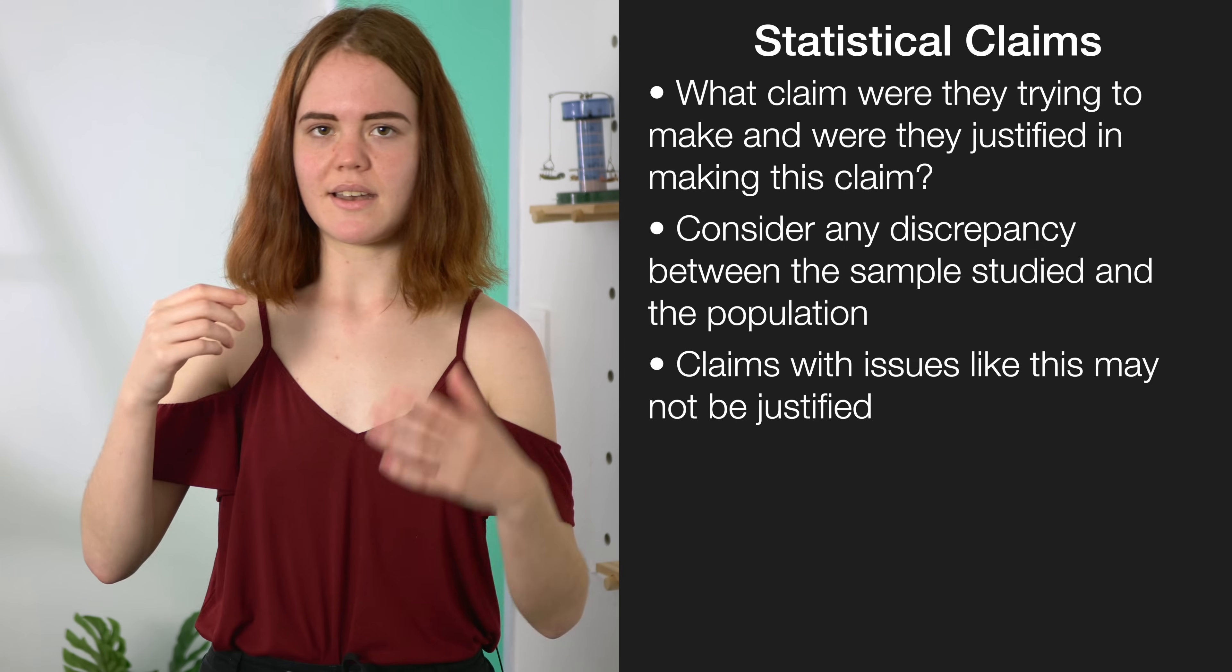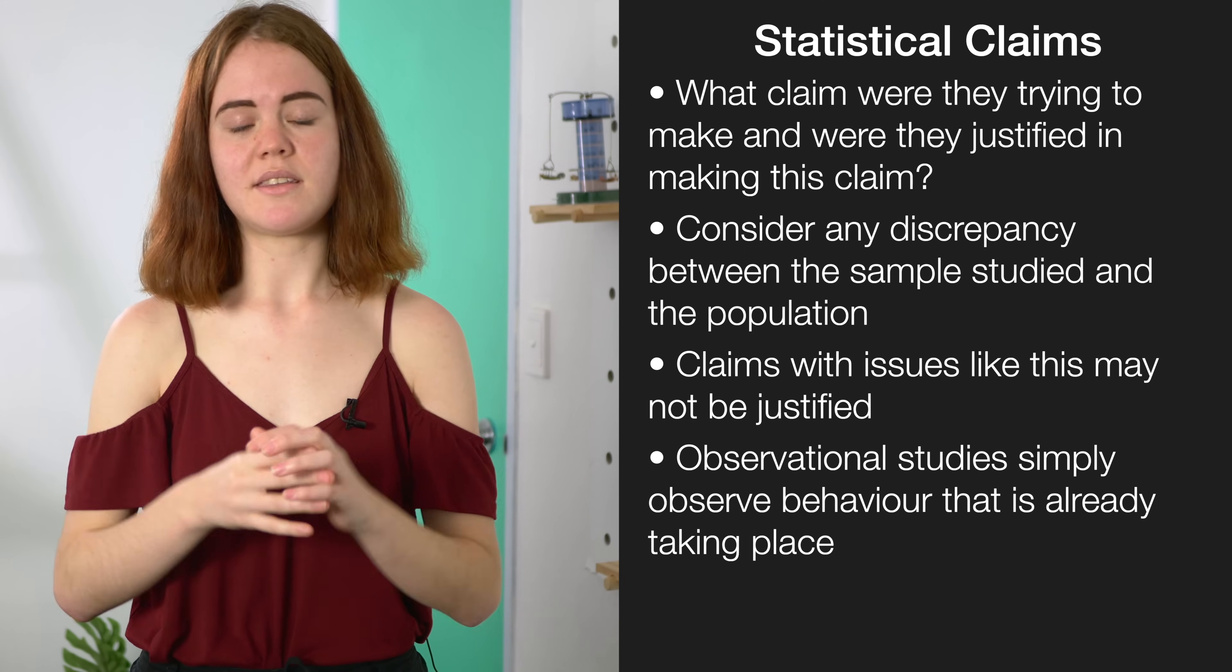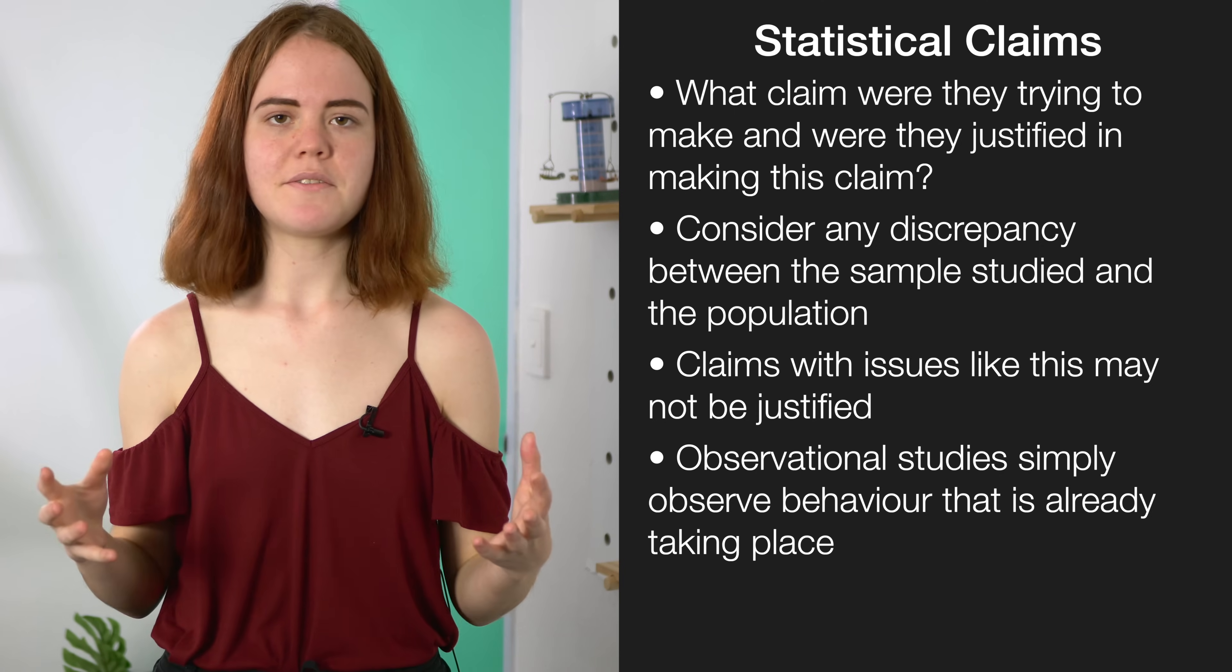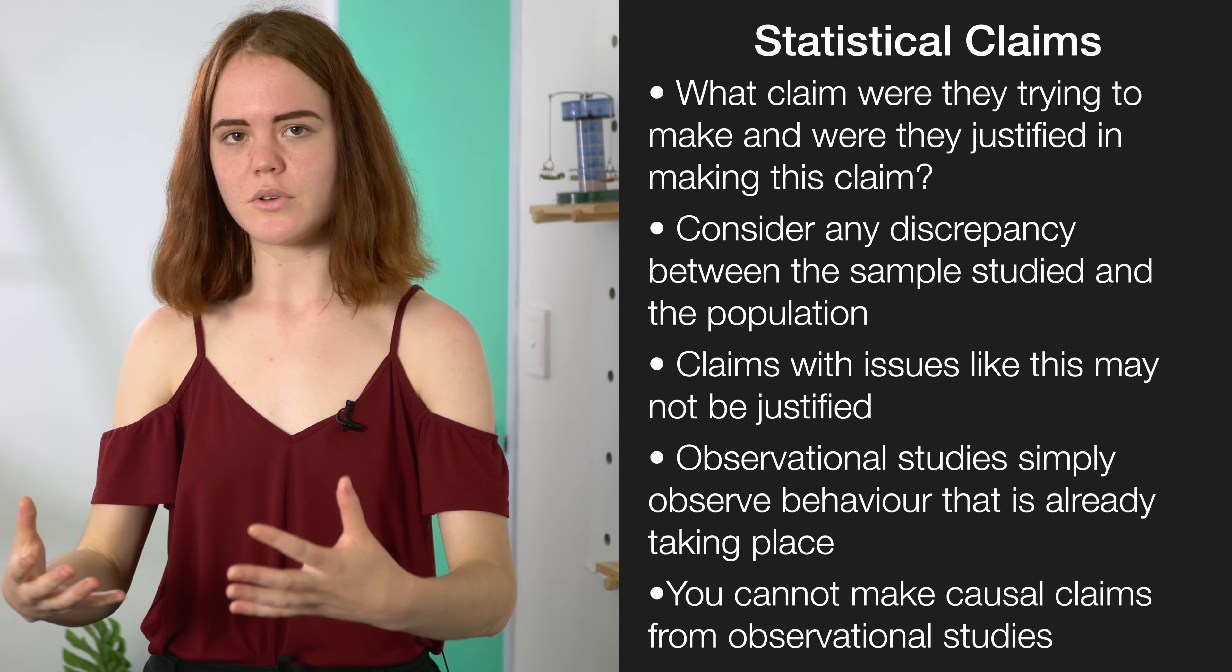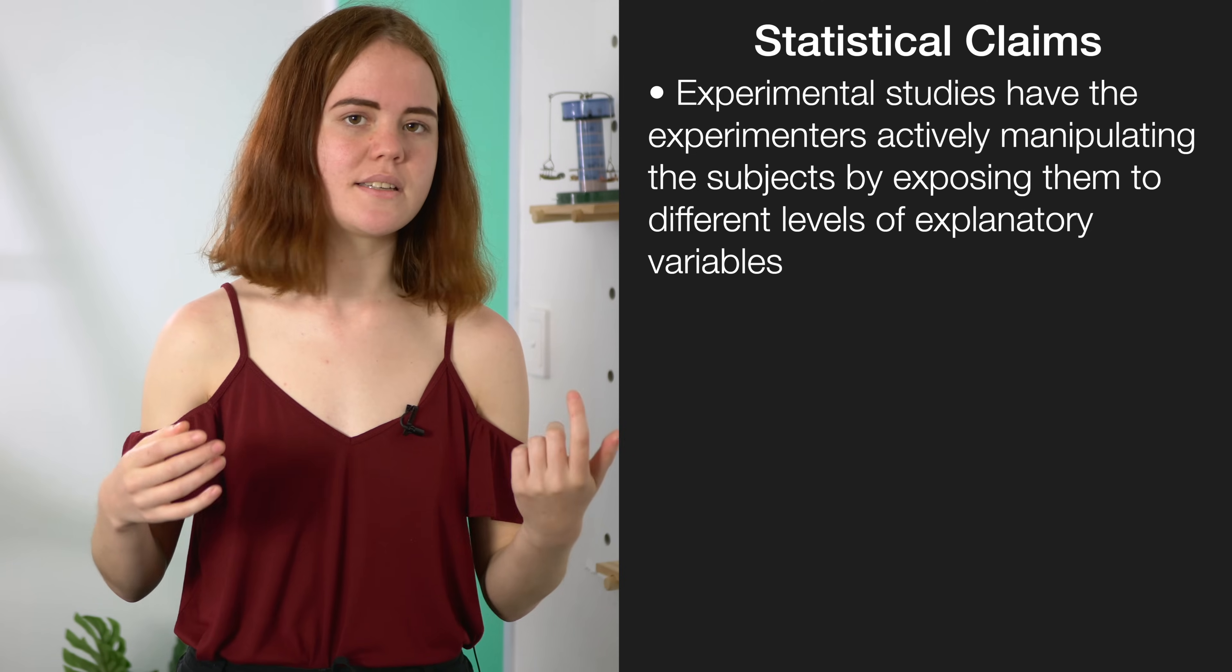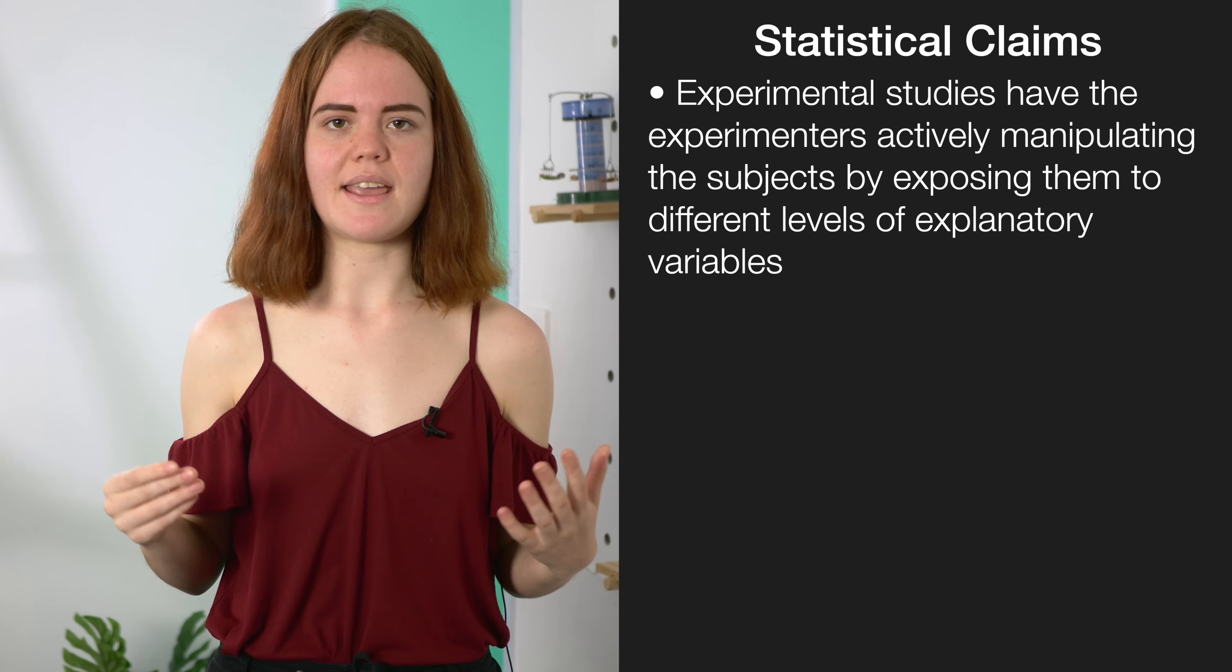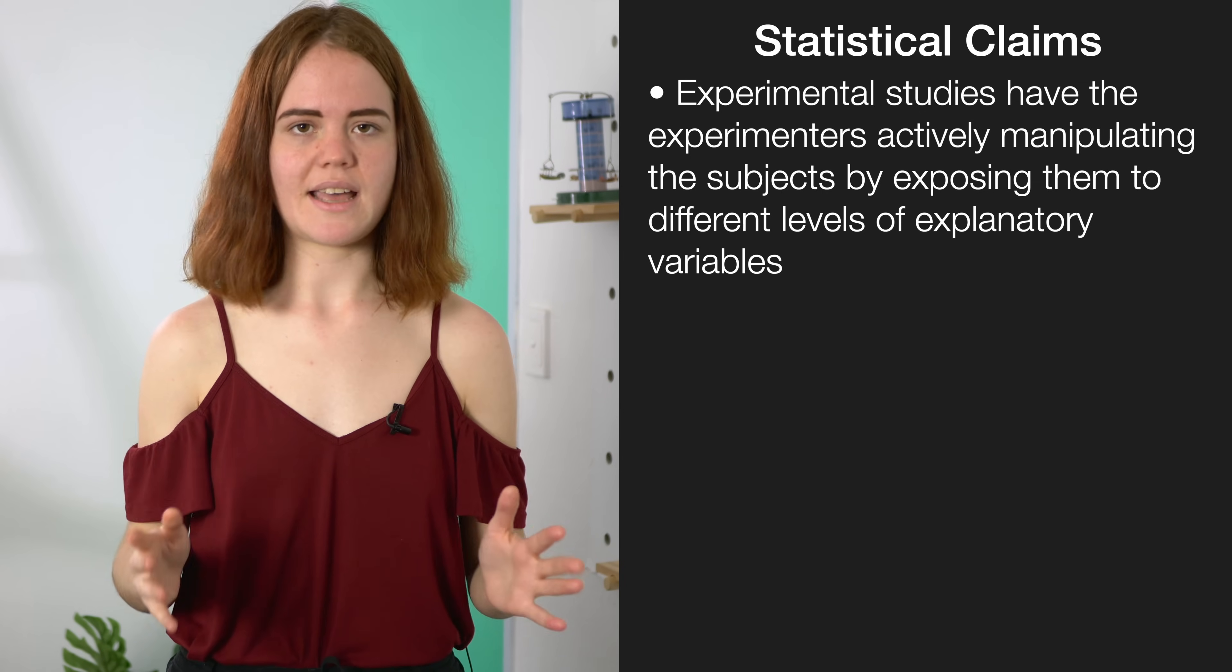The second big part is whether they did an experimental study or an observational study. An observational study is when the experimenter does not allocate the treatments, they just observe and record data about the participants. That will help you find correlations but you can't find causation because you didn't cause the treatments. An experimental design is when the experimenter randomly allocates treatments to participants so they can claim that any differences they saw are based on the treatments they allocated. If you did not do an experimental study, you cannot claim causation.